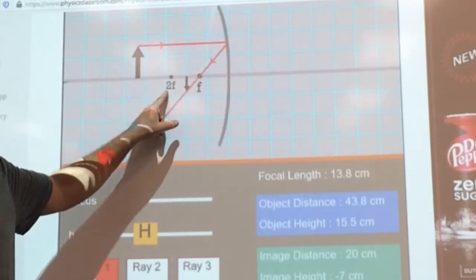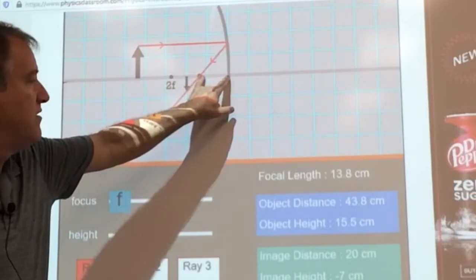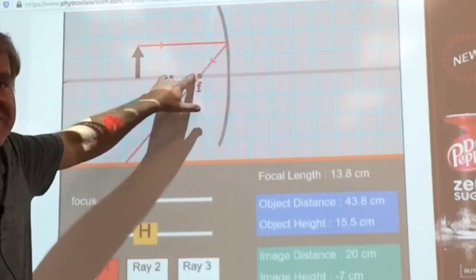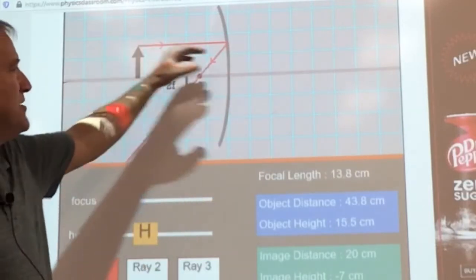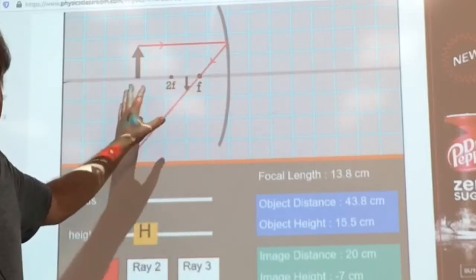Now you might go, what's this 2F out here? That's just, if this is F, it's twice that distance is all. Don't worry about it. Always to the mirror and through F, not 2F, through F.